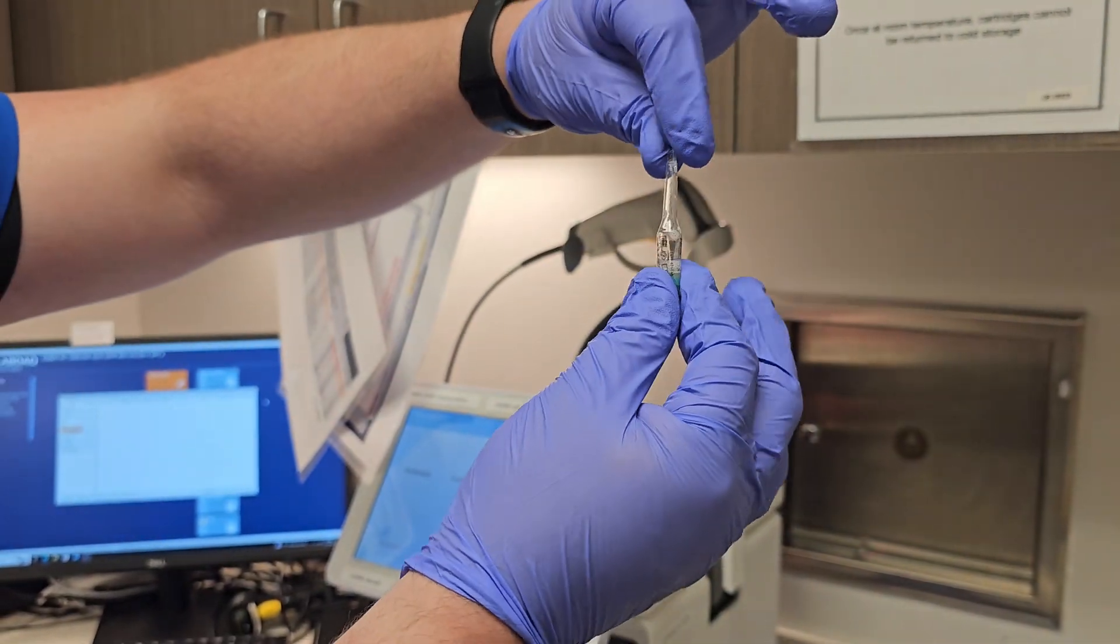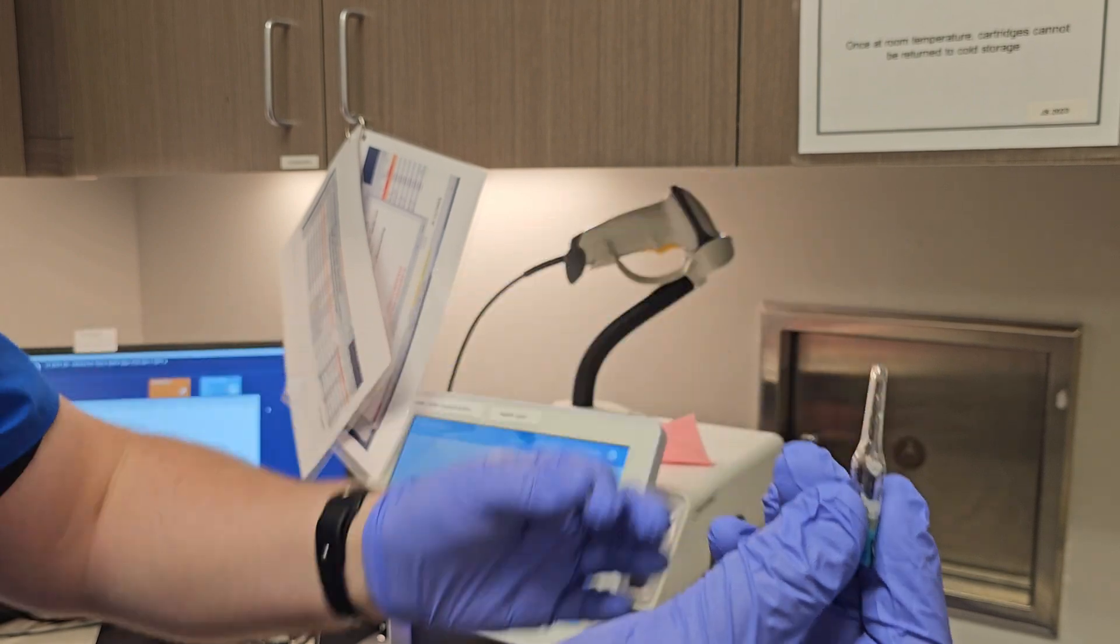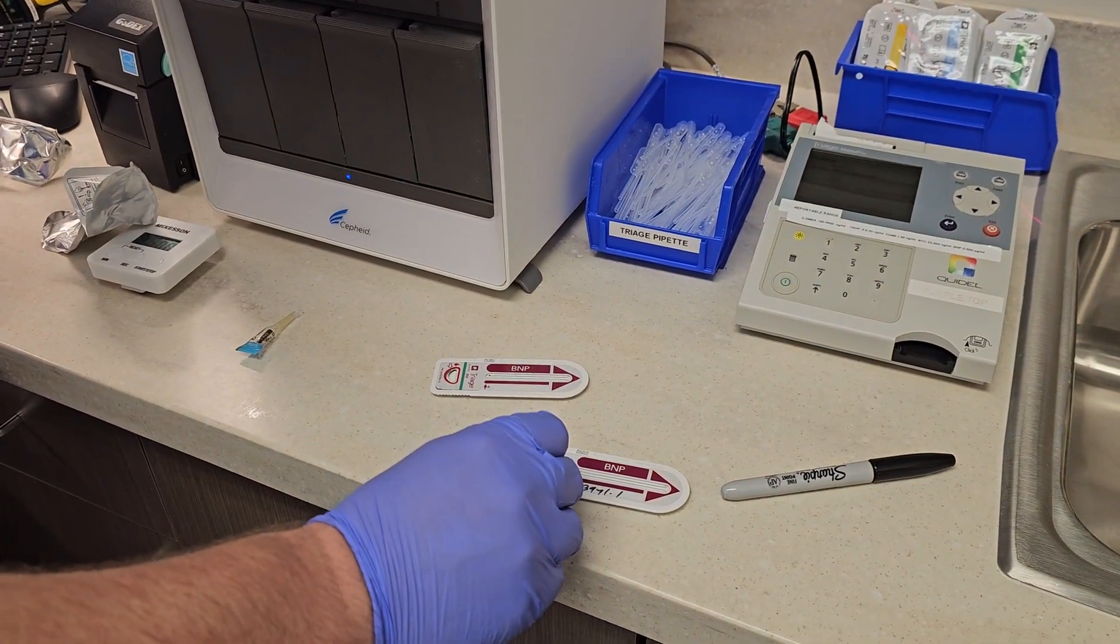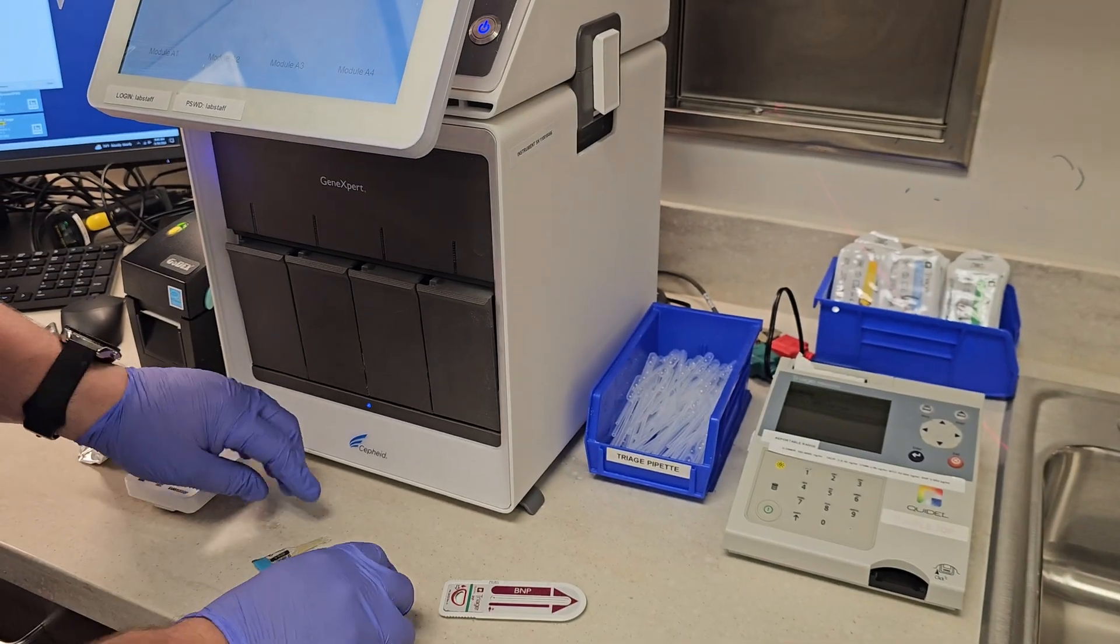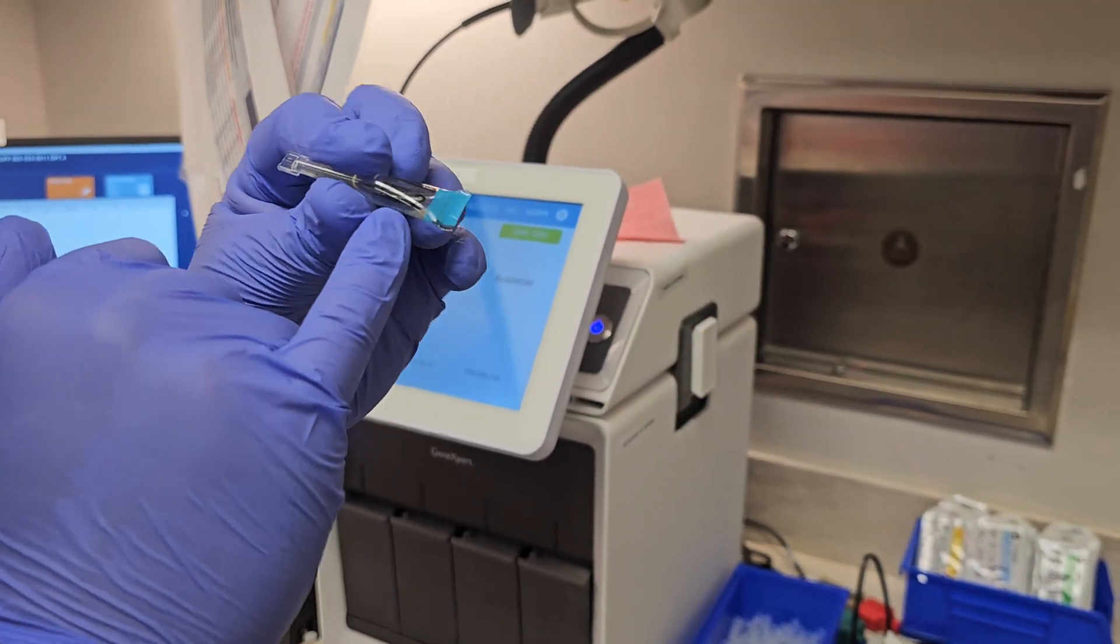Then I'm going to twist that top, come down here, and fill my sample well. That can go in the trash. Now we'll do the same process for the level two: 3976.